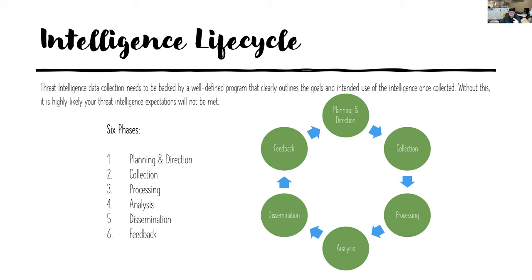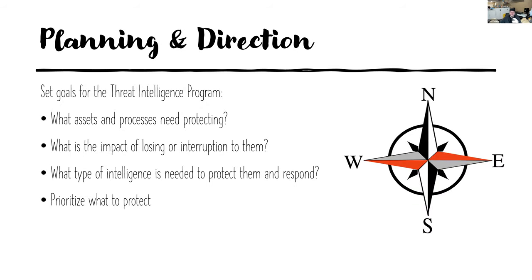From a planning and direction perspective, we need to set the direction — what are we protecting, what are the processes and assets we need to protect, what is the impact? This is where we move into the risk of the business. What type of intelligence is needed to protect the organisation? You have open source threat intelligence, geopolitical intelligence, commercial threat intelligence — and how do you prioritise that is where the threat intelligence life cycle helps.